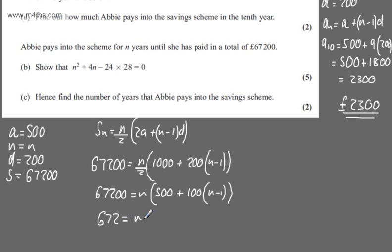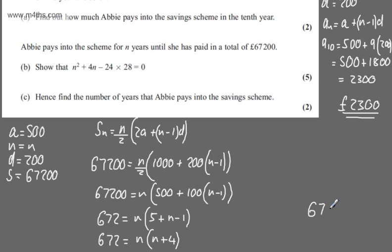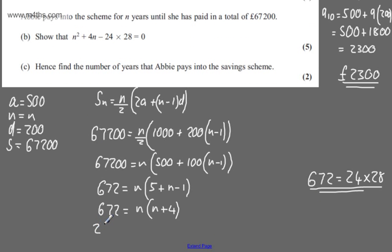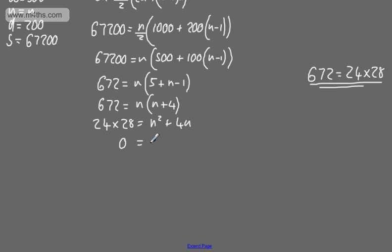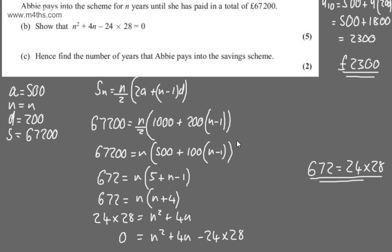At this stage I can divide both sides of this equation by 100. So 672 equals N times 5 plus N minus 1, which gives 672 equals N times N plus 4. I'm just going to note that 672 equals 24 times 28. So on the left we can write 24 times 28 equals, expanding the brackets, N squared plus 4N. Setting the left-hand side to 0, we have 0 equals N squared plus 4N minus 24 times 28, as required. So that's part B done.